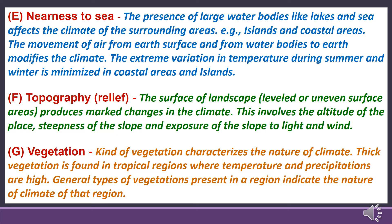Fifth is nearness to sea or closeness to water bodies — the presence of large water bodies like lakes and seas affects the climate of surrounding areas like islands and coastal areas. Movement of air from water bodies to the earth's surface modifies the climate, and extreme temperature variations during summer and winter are minimized in coastal areas. Fifth is topography — the surface of the landscape, whether level or uneven, produces marked changes in climate, involving the altitude of the place, steepness of slope, and exposure of the slope to light and wind. Sixth is vegetation — thick vegetation is found in tropical regions where temperature and precipitation are high, and the general type of vegetation present in a region indicates the nature of climate of that region.